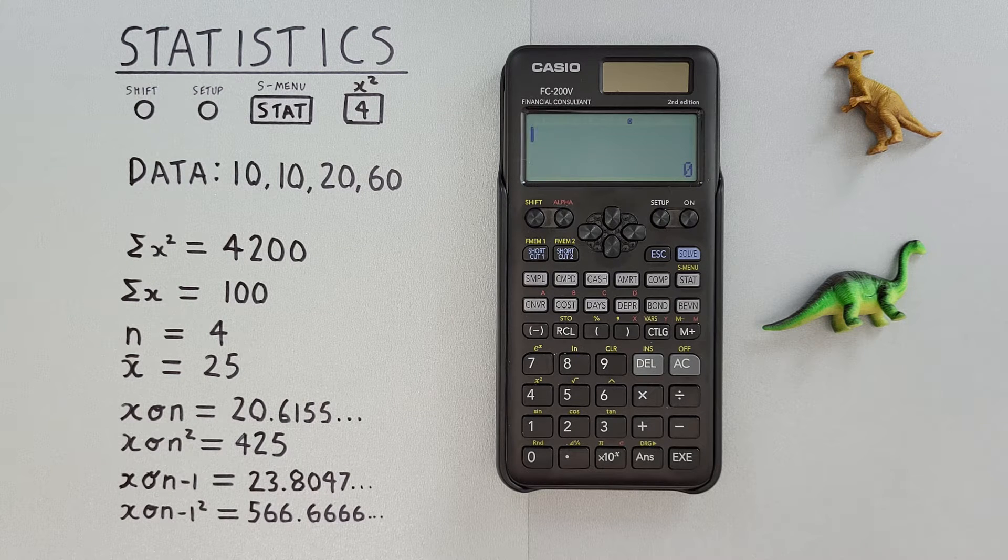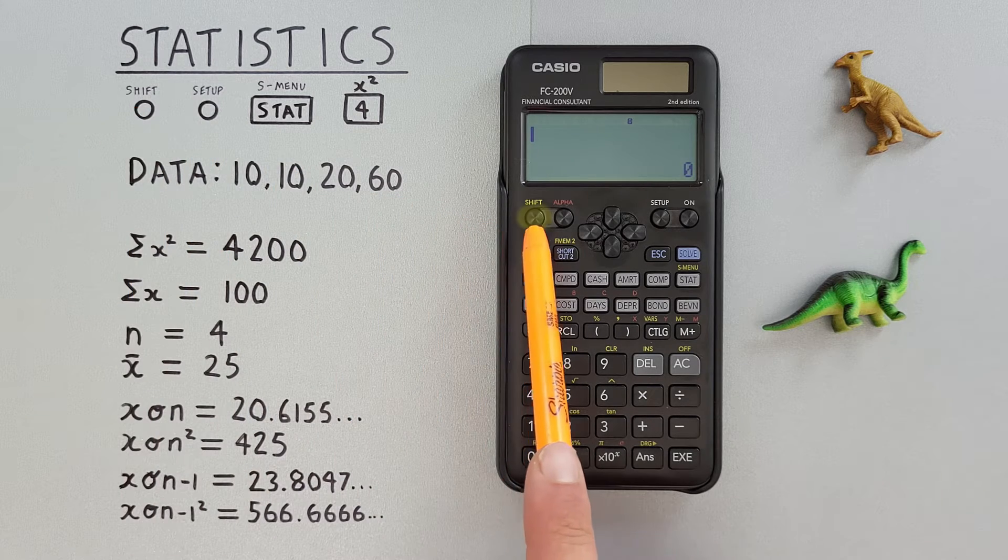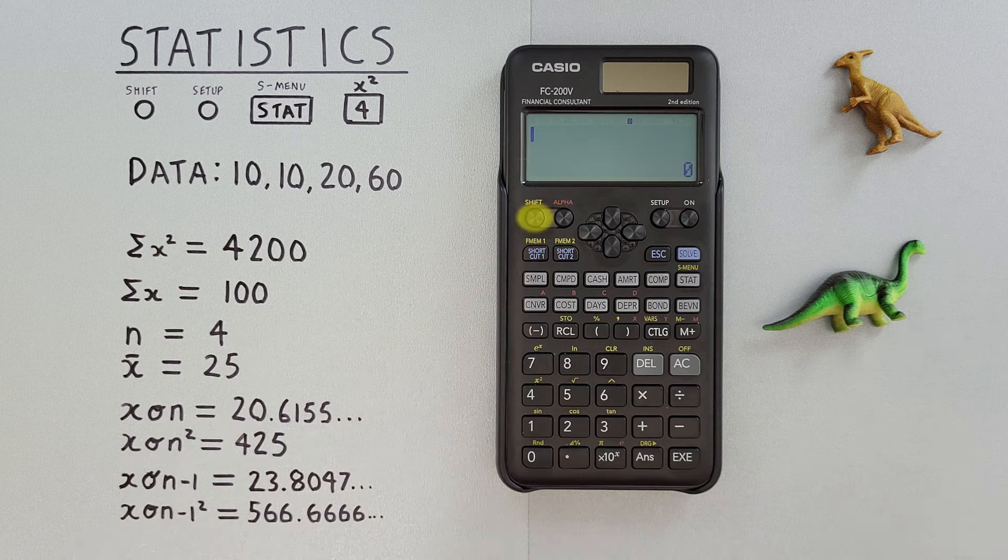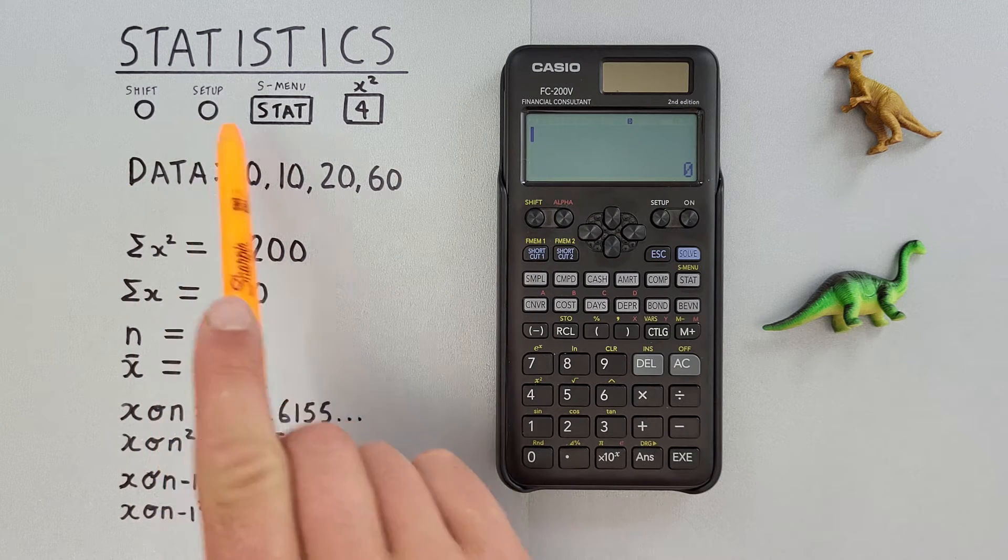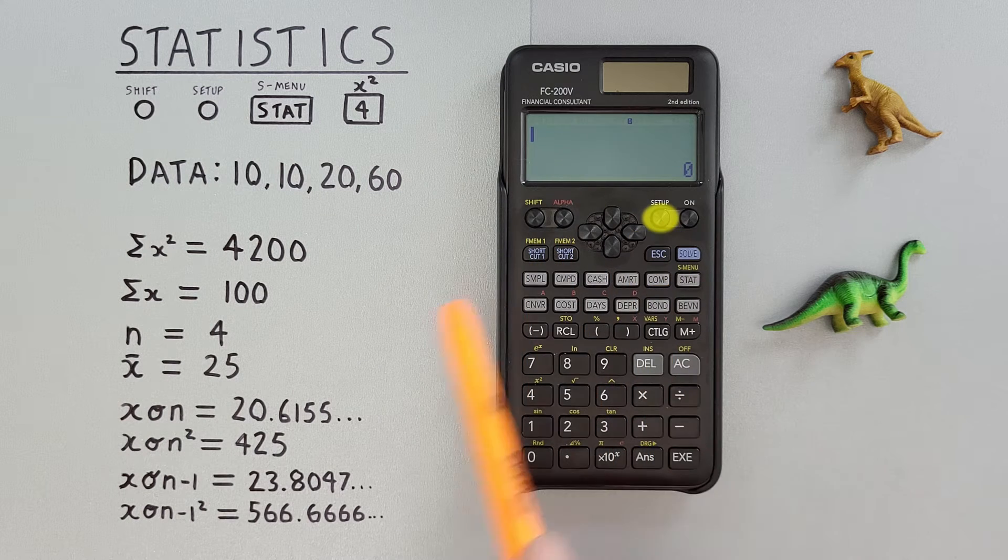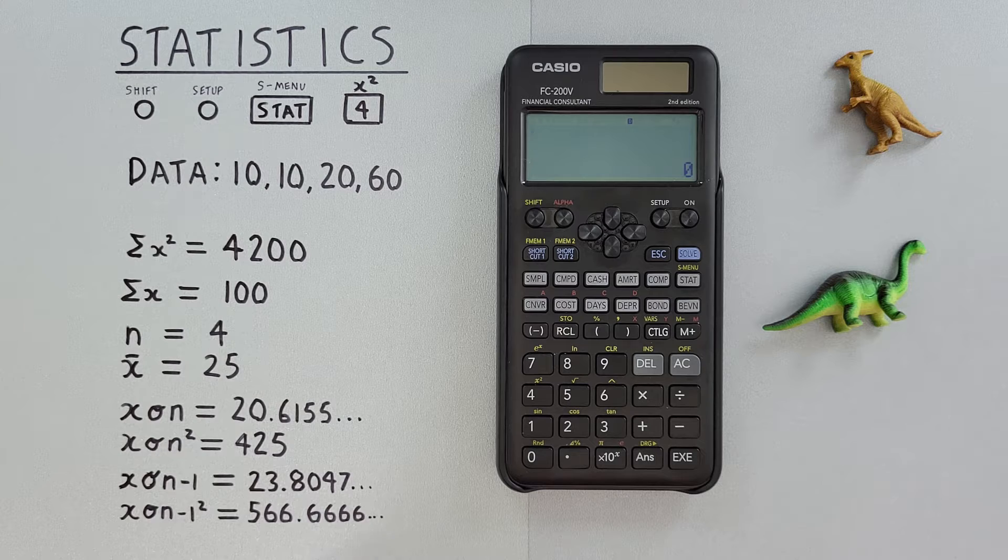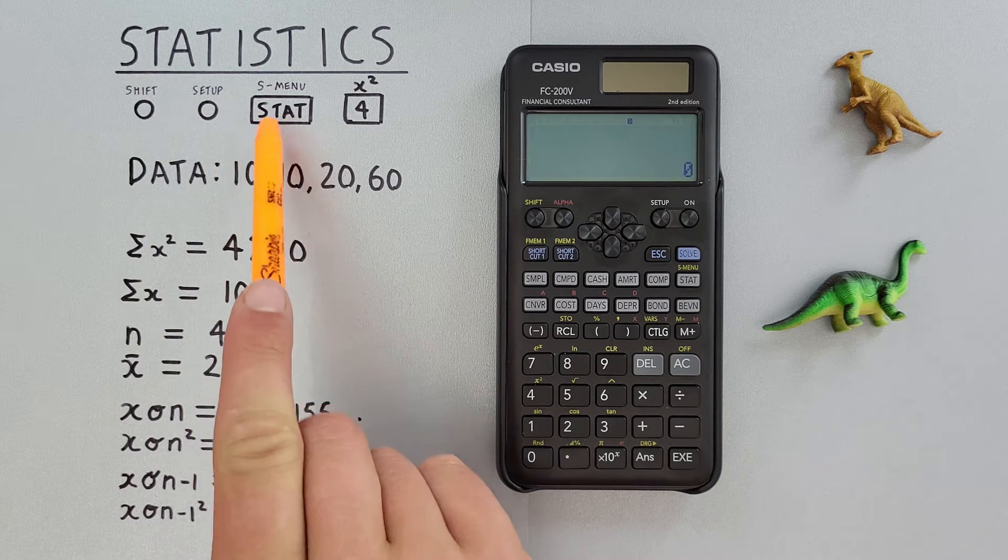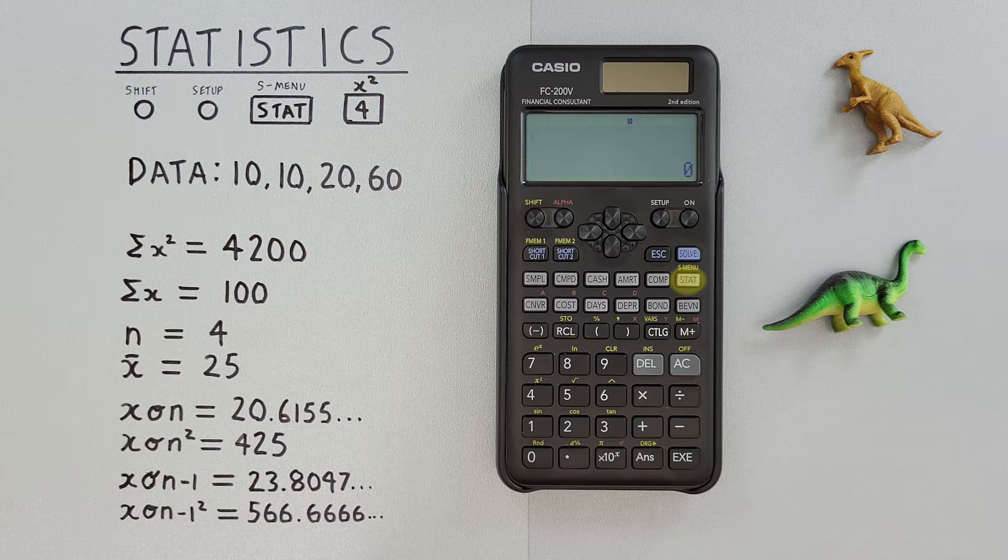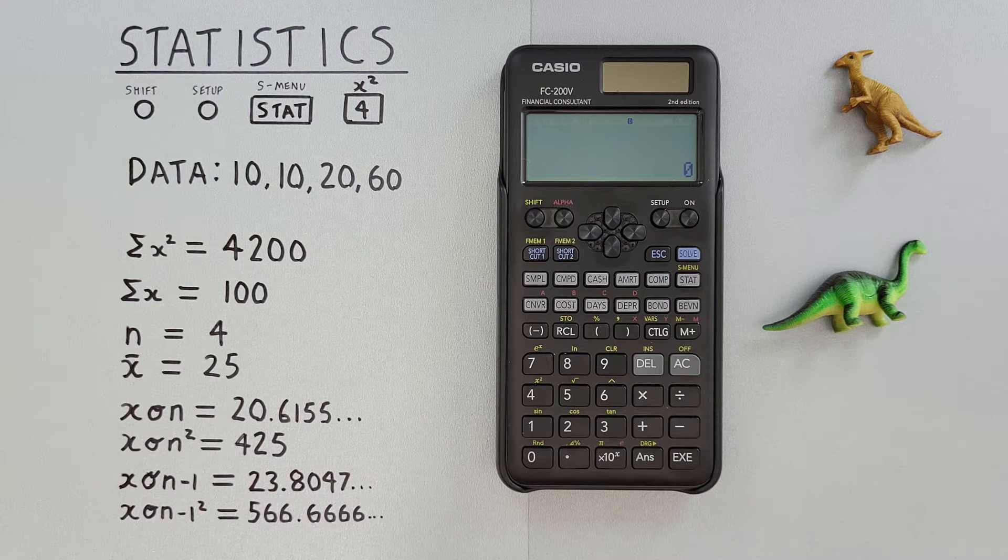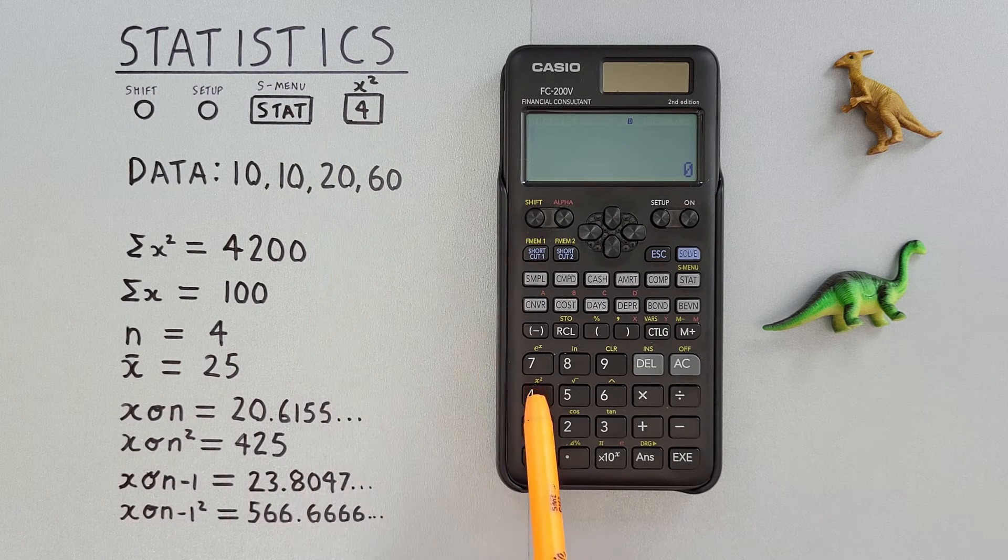To do this, we'll use the shift key located here, the setup key located here, the stat key with the shift function of S menu located here, and the four key with the shift function of x squared located here.